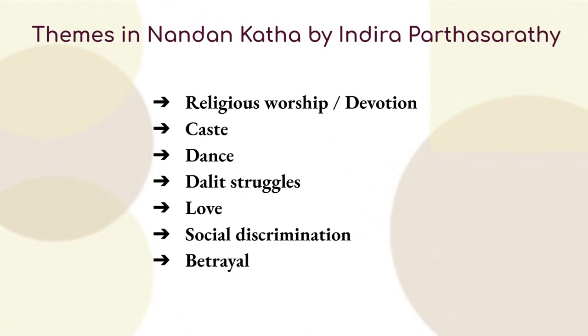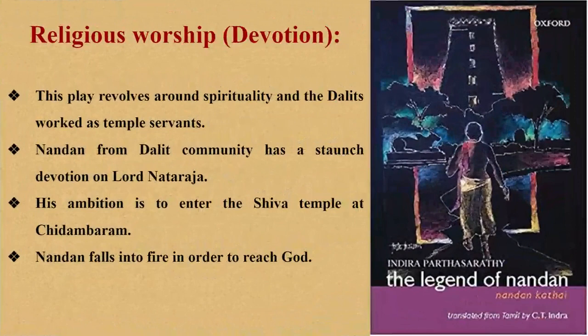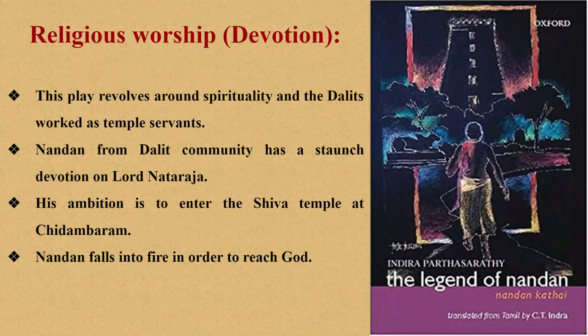The very first theme is religious worship or devotion. This play revolves around spirituality because Dalits work as temple servants, and the setting is in and around the temple. Nandana from the Dalit community has a staunch devotion to Lord Nataraja. His ambition is to enter the Shiva temple at Chidambaram to enjoy the beauty of Nataraja closely. At the end of the play, Nandana falls into fire in order to reach God, which reveals his true devotion.